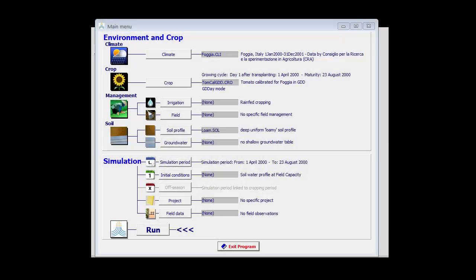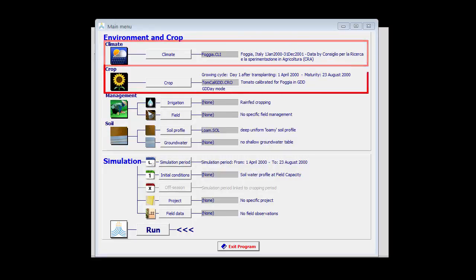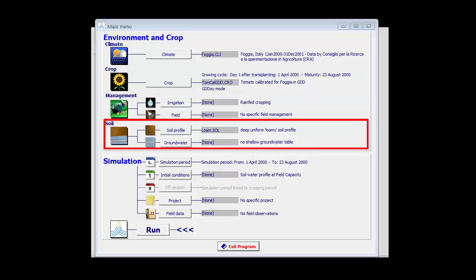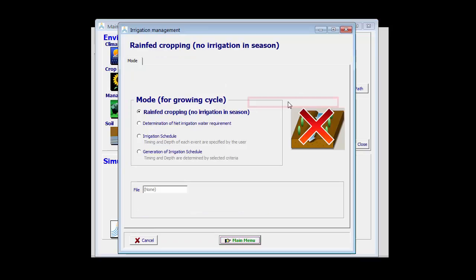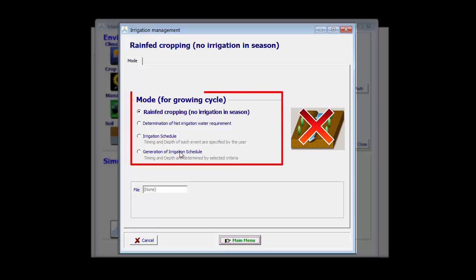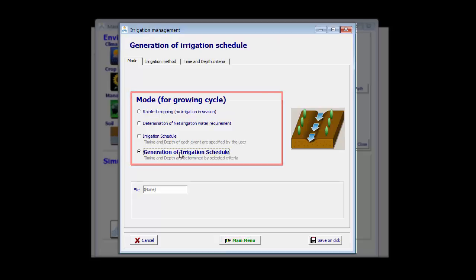To illustrate the generation of an irrigation schedule, I'm going to run an example for Foggia, where tomatoes are cultivated. They were planted on the 1st of April on a loamy soil. To generate an irrigation schedule, I click here on the irrigation button and then here on the update irrigation management. The mode I'm going to select is the generation of an irrigation schedule.